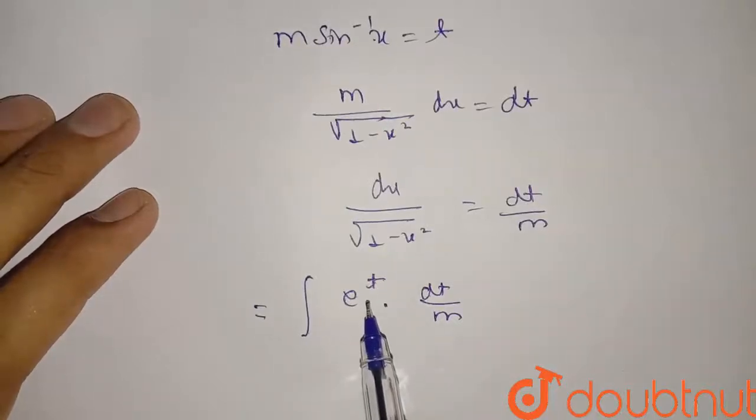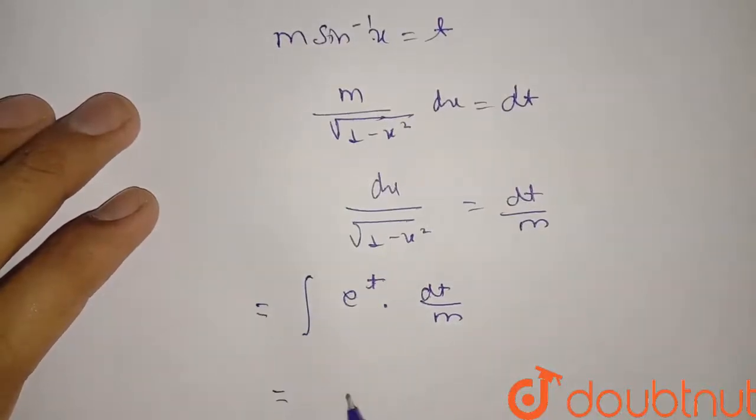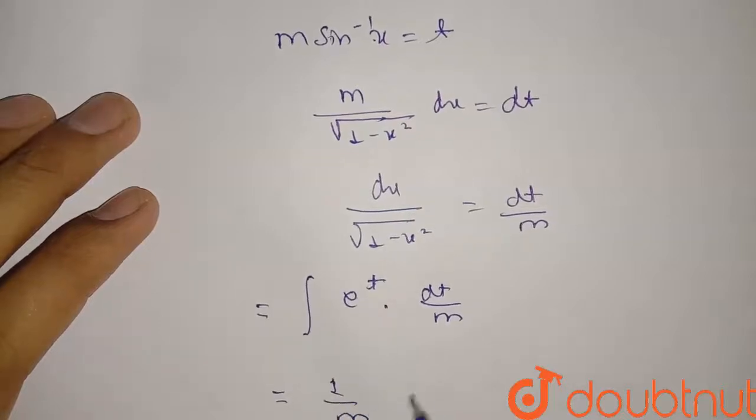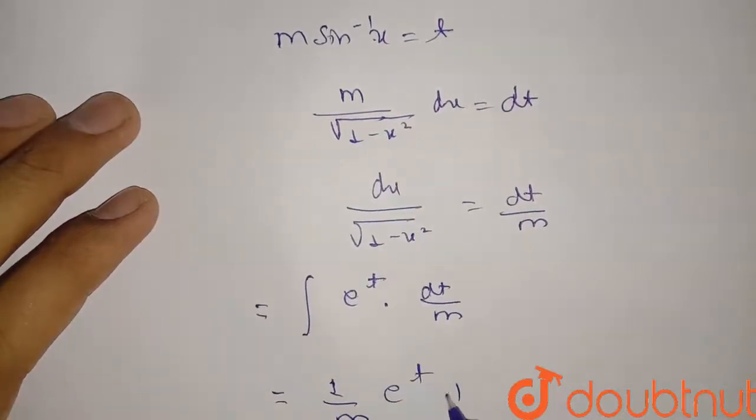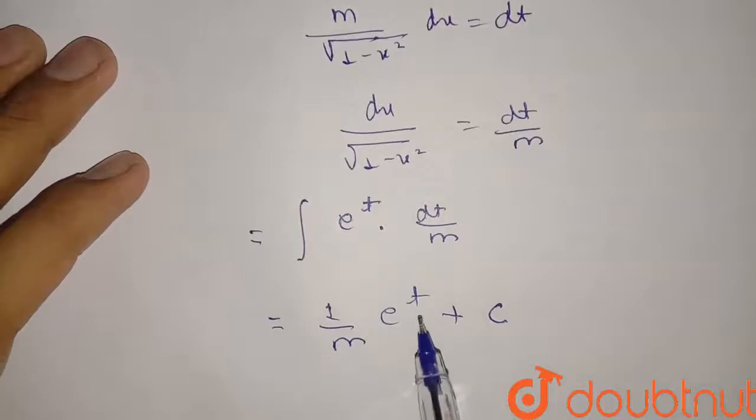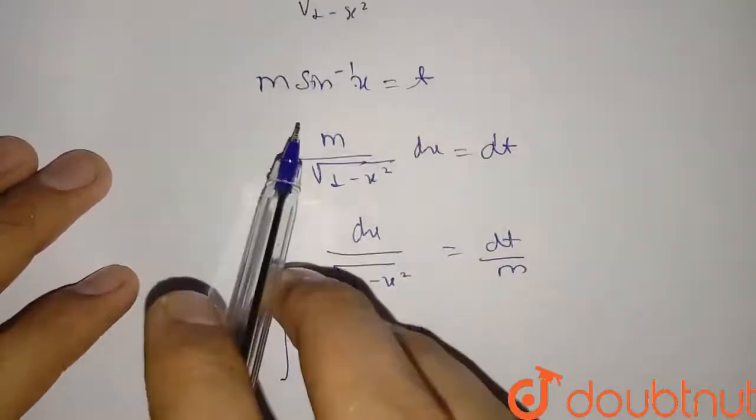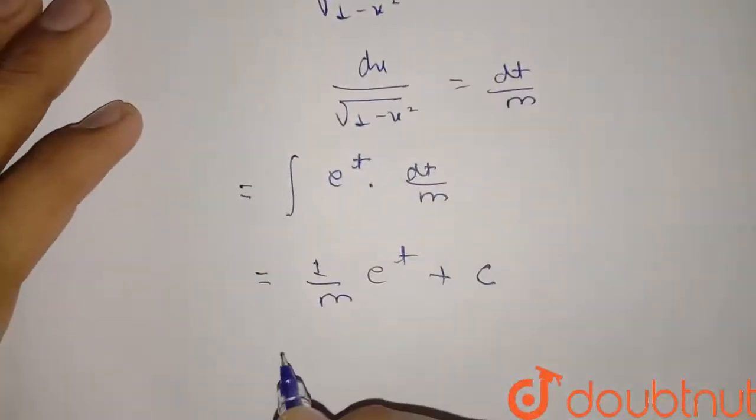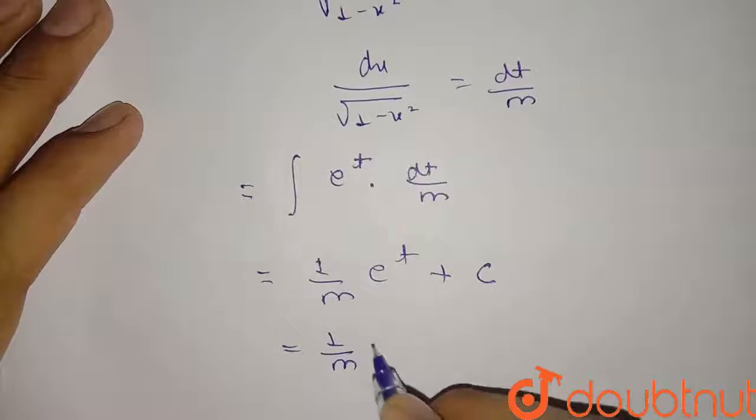So it will be one upon m into e raised to t plus c, right? Now again substituting this t value which we have taken, m into sine inverse x, right? So final answer will be one upon m into e raised to m sine inverse x plus c. This is our final answer of the integration.